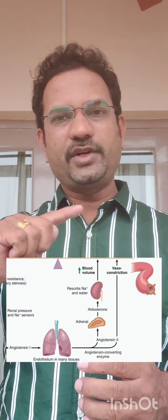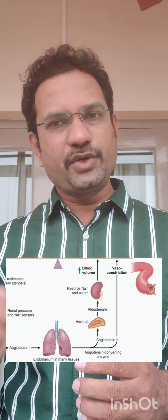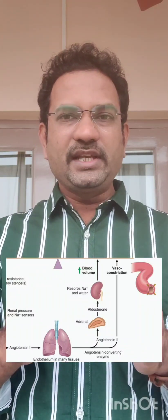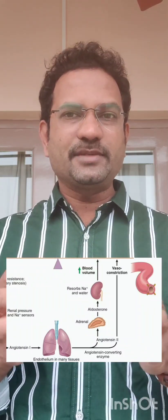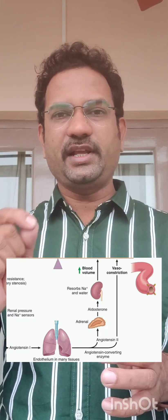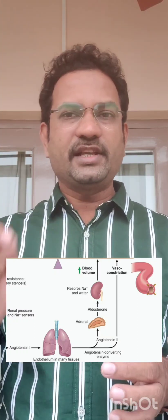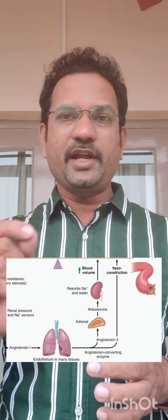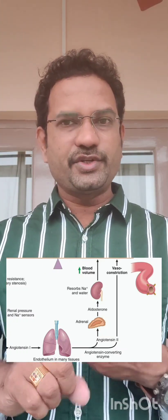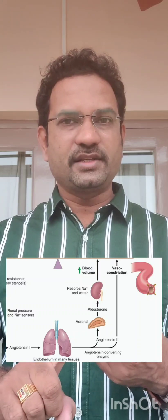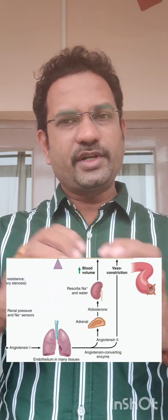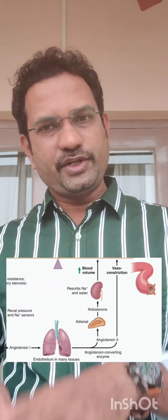So the liver releases angiotensinogen, and renin acts on it, converting angiotensinogen to angiotensin 1. Angiotensin 1 is then converted to angiotensin 2 by endothelial enzymes — specifically, angiotensin converting enzyme (ACE) — which is released by endothelial tissues such as vascular tissue and the lungs.